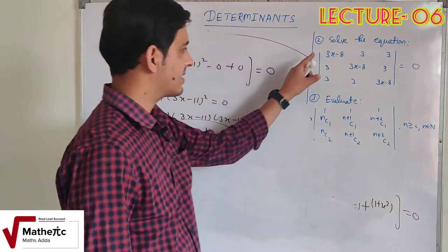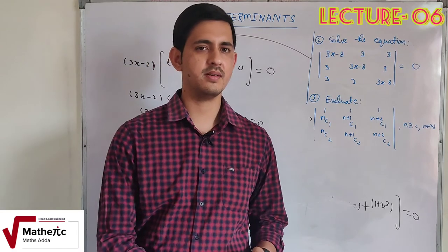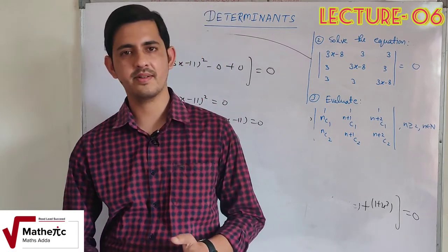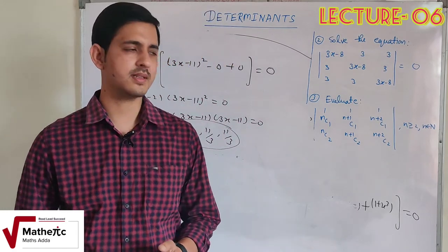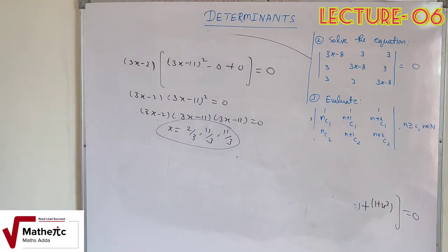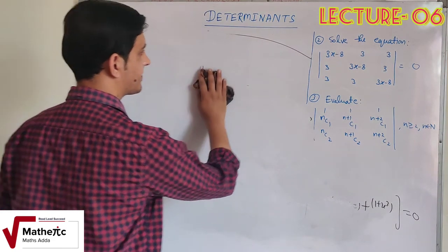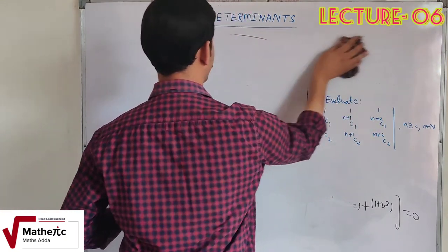अगर properties नहीं लगाते तो directly expand करने पर cubic equation बनती जो solve करना मुश्किल होता। Properties का use करके यह काफी easy हो जाता है। यह second question का solution है। अब आते हैं third question में — इसमें C (combination) वाले terms आए हैं।